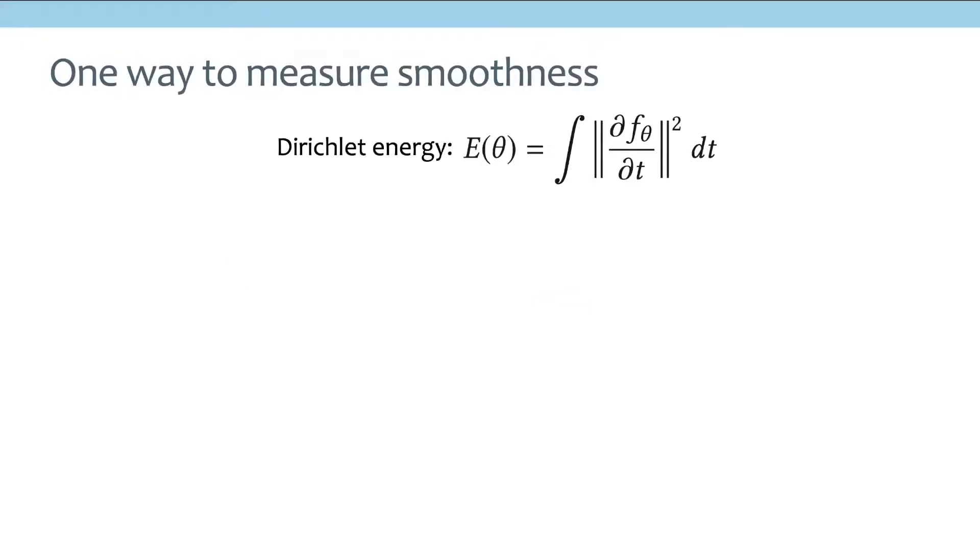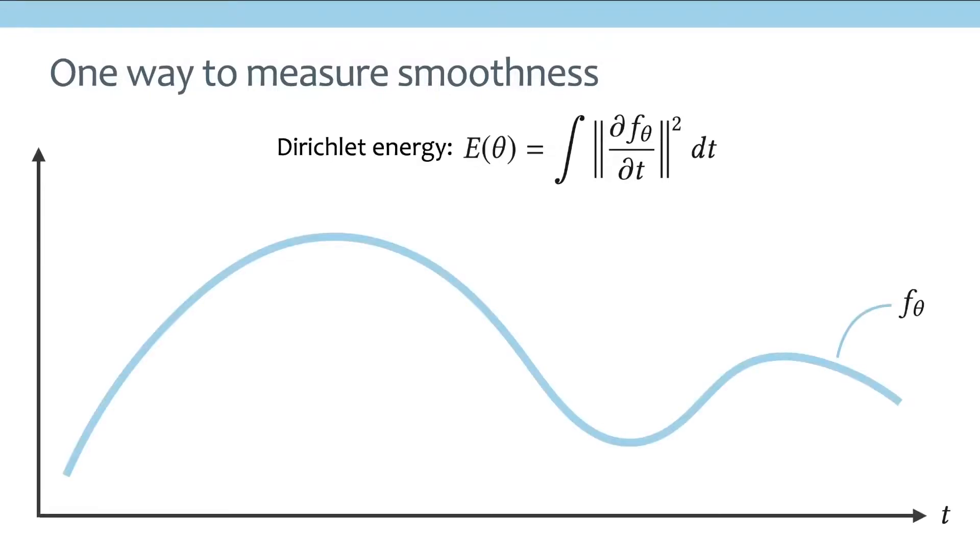One way to measure smoothness is to use the Dirichlet energy. If your neural network is a 1D function, then this Dirichlet energy basically measures the square norm of the derivative. So if this function is 1D, it's basically the square magnitude of the slope. But on a computer, we usually cannot compute this Dirichlet energy analytically, so we have to somehow discretize this energy.